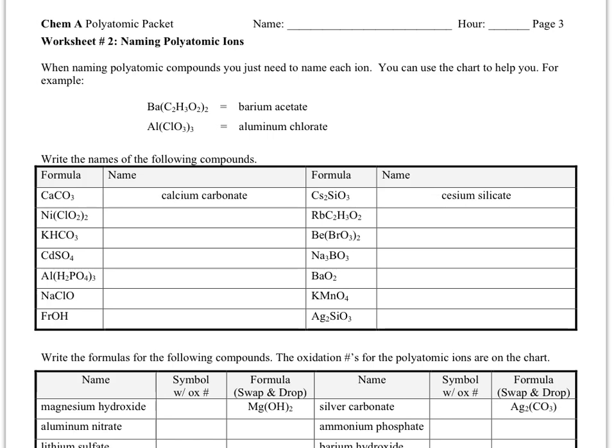So you need to use the chart of polyatomic compounds that's on worksheet 1 and also on the back of any periodic table that you might have. We're not expecting you to memorize these polyatomic ions. If you happen to memorize some of the common ones, it might make your life a little bit easier because you won't have to flip to the chart as often.